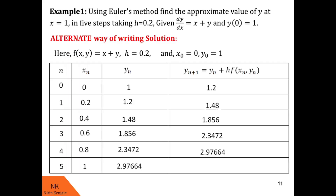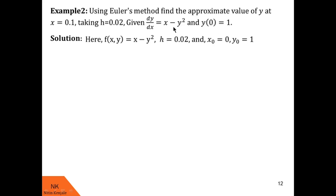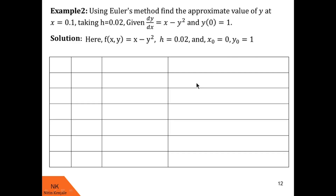Let us solve one more example. We are asked to use Euler's method to find the approximate value of y at x = 0.1, taking h = 0.02. The given differential equation is dy/dx = x − y² with initial condition y(0) = 1. We set up a table with column headings n, xn, yn, and yn+1.